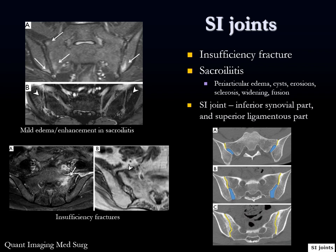The sacroiliac joints can show insufficiency fractures or sacroiliitis - abnormal edema and enhancement about the sacroiliac joints, which you'll see especially on pelvis pain protocol MRIs. Also look for linear low-signal abnormalities consistent with insufficiency fractures in the sacrum. Worth remembering: the SI joint has variant anatomy with an inferior synovial part and a superior ligamentous part, which is not synovial.